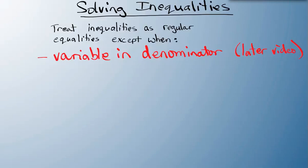The other place where you have to treat it differently is if you multiply or divide both sides by a negative constant.